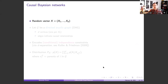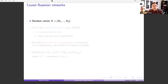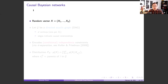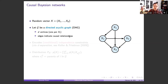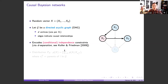We're going to work within the framework of causal Bayesian networks. We'll have a random vector of D random variables and a directed acyclic graph with one vertex per random variable. As opposed to regular Bayesian networks, in causal Bayesian networks the edges indicate a causal relationship — if I play with X1 it affects X2, and if I play with X2 it affects X3 but not X1. These encode conditional independence constraints via D-separation. For example, X1 and X3 are conditionally independent given X2, because X2 blocks the path.